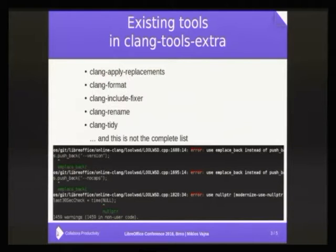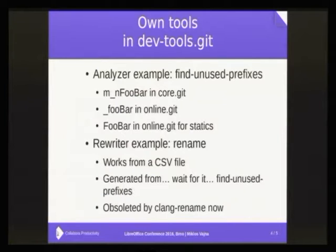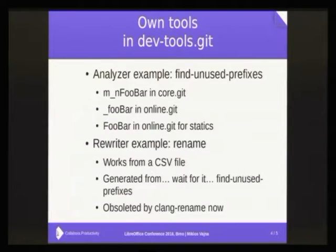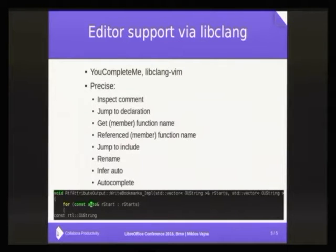This is not a complete list — there are many other tools. Based on libtooling, our DevTools repo contains two example tools: one can rename files, and one can analyze code and issue output. For example, if a class has prefixes used consistently in some modules, that can be added automatically. Also, using libclang, you can deduce the type of an 'auto' variable and print it out in Vim or Emacs. Thank you for your attention.